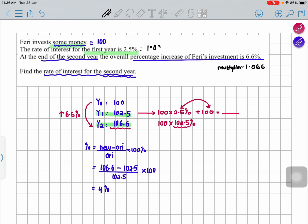What is the multiplier over here? It is 1.025. So generally what you will do when you are finding for the second year, you will do 1.066 divided by 1.025. What will this give me?